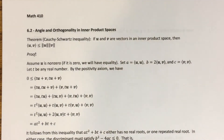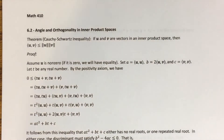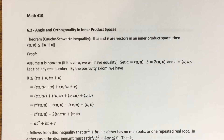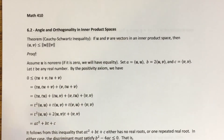We're in section 6.2, talking about the concept of angle and orthogonality in inner product spaces. This section is going to start off with an inequality that we've looked at in the special case of Rn back in Chapter 3 — the Cauchy-Schwartz inequality. Back then we introduced it as a necessary requirement to talk about the angle between two vectors in Rn, but we deferred the proof until Chapter 6 because the proof here covers a more general case.